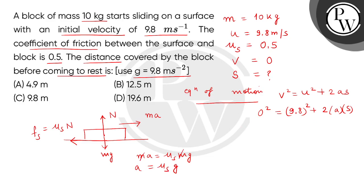Substituting, we get minus 2 multiplied by mu S times g times S equals 9.8 squared. Putting the value of mu S: minus 2 times 0.5 times 9.8 times S equals 9.8 times 9.8. We will ignore the minus sign.